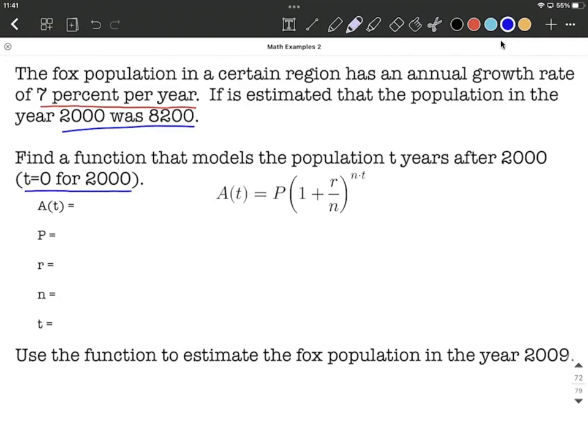I'm going to use the compound interest formula: a of t equals p times the quantity 1 plus r over n raised to the nt.